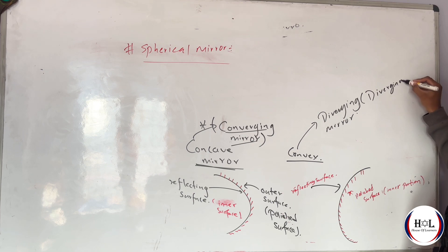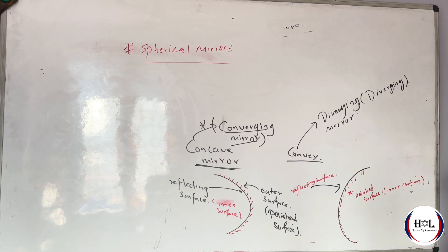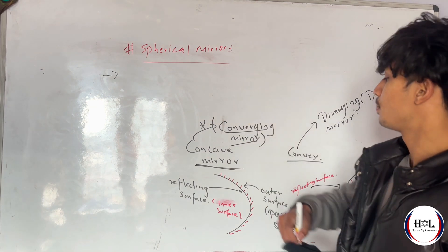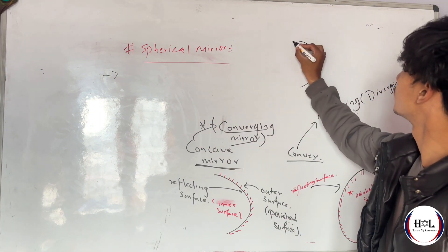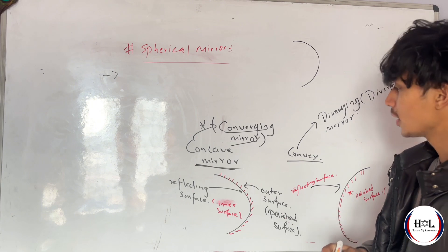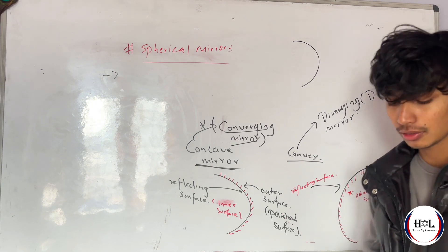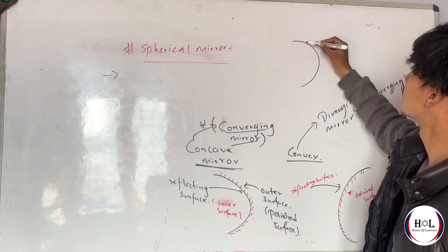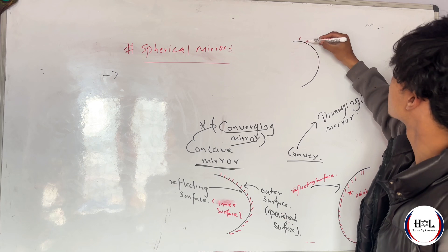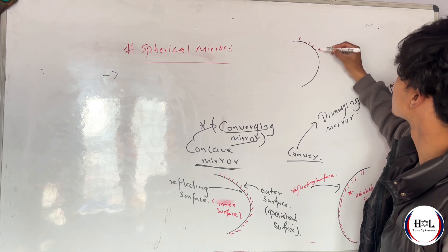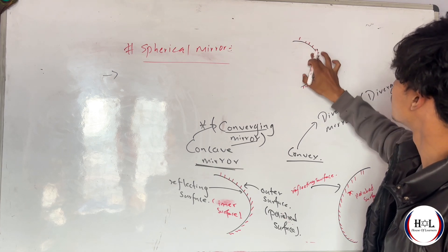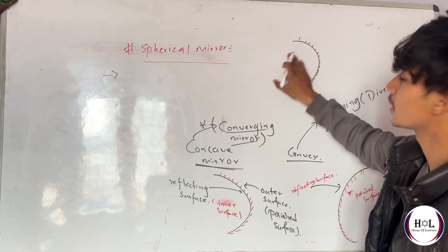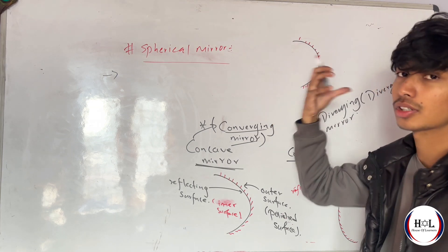Diverging mirror. This one is a concave mirror — concave mirror — and the outer surface is polished. The inner surface, the inner face, is the reflecting surface.